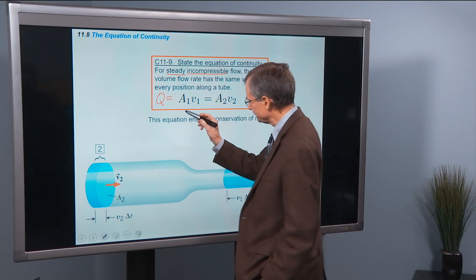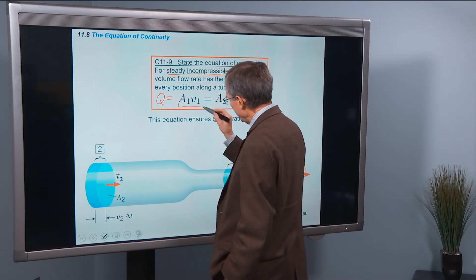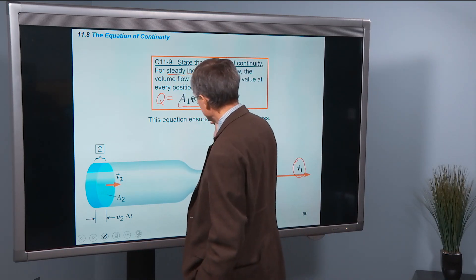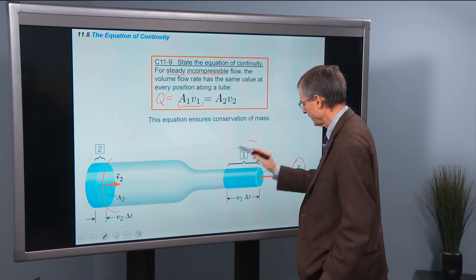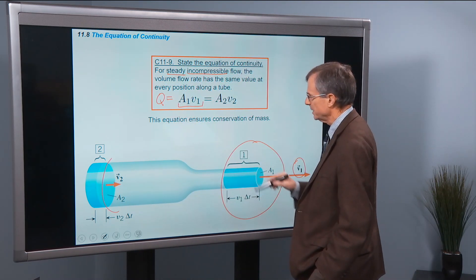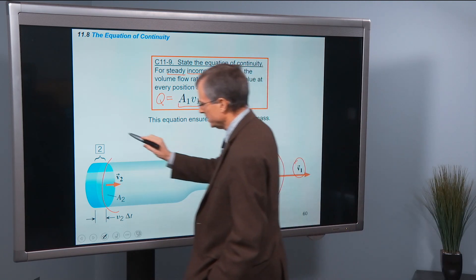So that just says that area times the velocity here, area times the velocity, equals the area times the velocity over here.